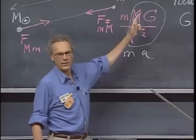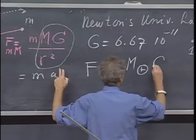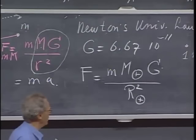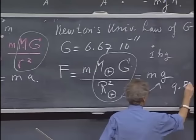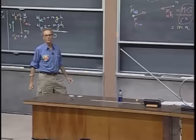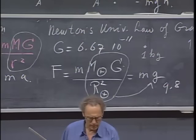Ten times further away, the gravitational acceleration is down by a factor of 100. If you are standing near the surface of the Earth, the force you experience is your mass times the mass of the Earth times G divided by the radius of the Earth squared — and that must equal mg. So g = GM_Earth/R_Earth². Substituting the mass of the Earth (6 × 10²⁴ kg), G, and the radius of the Earth (6400 km), out pops our well-known value of 9.8 m/s².